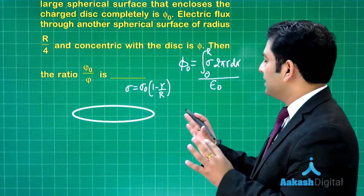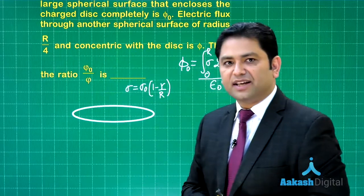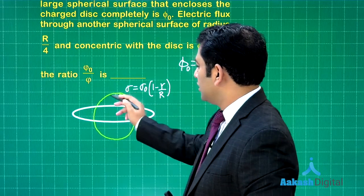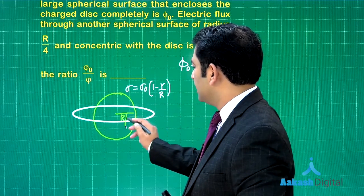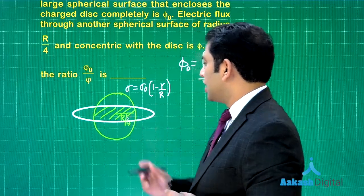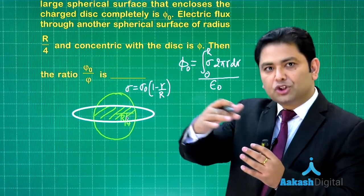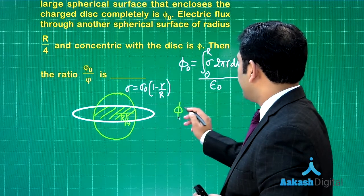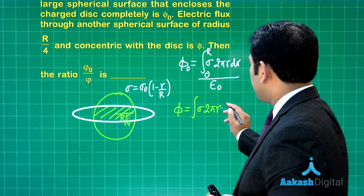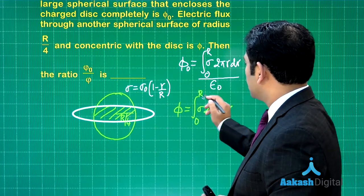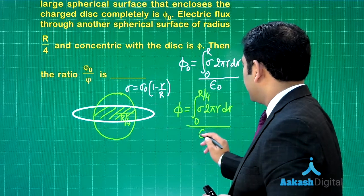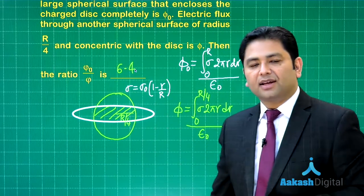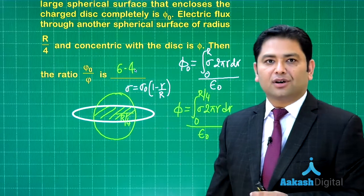In the second case, we have to calculate flux through a sphere whose radius is R/4. That means essentially I need to calculate the charge on the disk up to the radius of R/4. In the second case, the value of φ is going to be σ times 2πr dr, limit 0 to R/4, divided by ε₀. You calculate the ratio; that will be 6.4. And with this we end up the discussion for paper one.